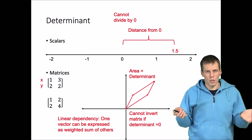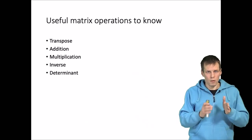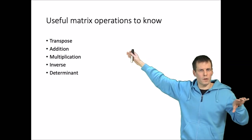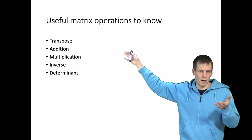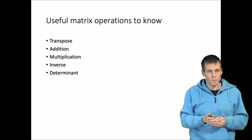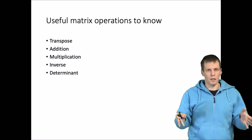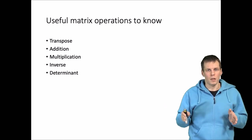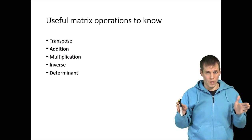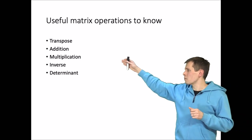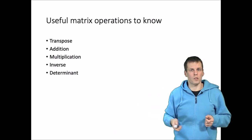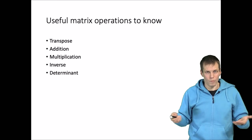In summary, you need to understand the general concept of matrices — rows, columns, and numbers — and just a few key operations. Transpose is a convenience tool for reshaping matrices so operations become possible. Addition and multiplication work element-wise or via row-column products. Inverse is analogous to division. Determinant is useful to understand when you can apply the inverse: a zero determinant means the matrix cannot be inverted, just as dividing by zero is impossible.